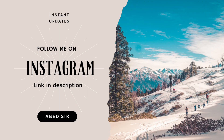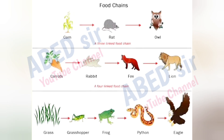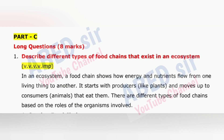First important question is 1: Describe different types of food chains that exist in an ecosystem. In an ecosystem, a food chain shows how energy and nutrients flow from one living thing to another. It starts with producers, like plants, and moves up to consumers, animals, that eat them. There are different types of food chains based on the roles of the organisms involved.